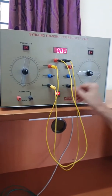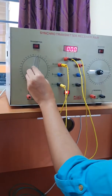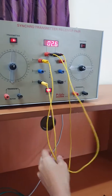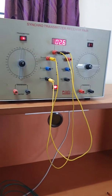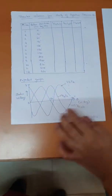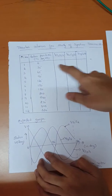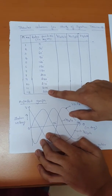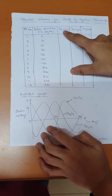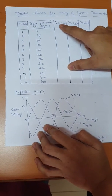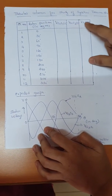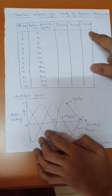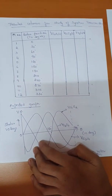Now we will switch on the supply. We need to turn on only the transmitter part. Before that, we need to keep the angle at 0 degree only. Switch on the transmitter part. Now observe this is the tabular column for the synchro transmitter pair. Here we have this tabular column: the first column is the rotor position — the angle starting from 0 to 360 degrees — and then the voltage across V S3-S1, the voltage across S1-S2, and the voltage across S2-S3. By continuously changing the rotor position, we need to note down the voltage across all three terminals. That is our first case.